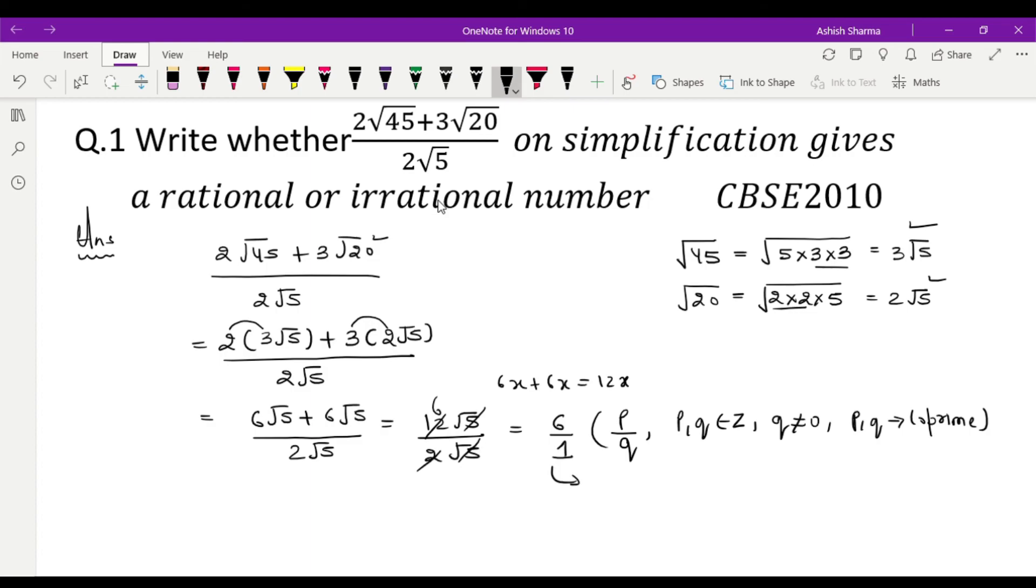To yeh aapka it is a rational number. Theek hai, question ko dekhne pe lagta hai bahut saare root hain to yeh irrational hai. But after simplification, you can conclude, you can judge that it is a rational number. Thanks for watching the video.